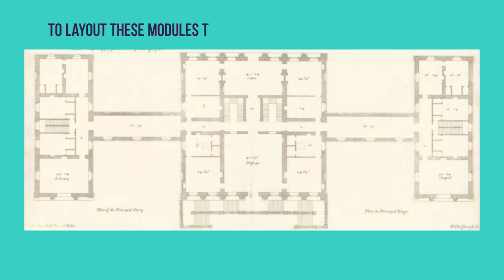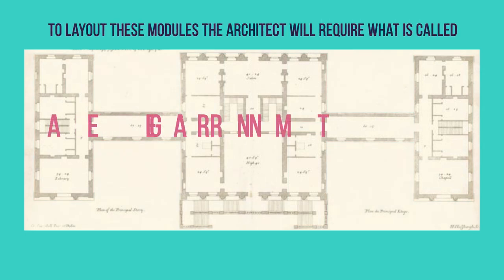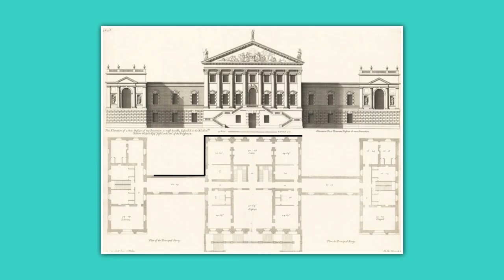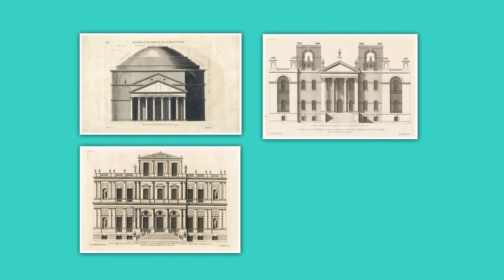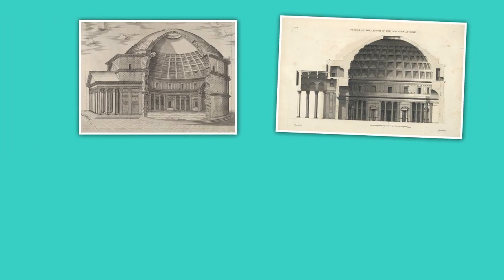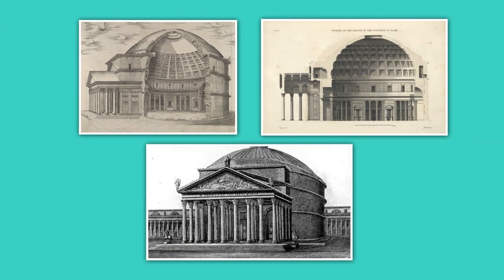To lay out these modules, the architect will require what is called arrangement — the process of laying out the ground plane, which is the outlines for the surfaces of the building, the elevation to draw pictures of the building facades in detail, and perspective for sketching the front of the building while projecting the sides into the background.